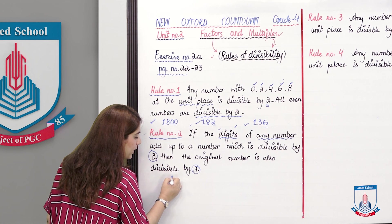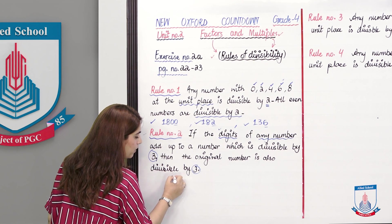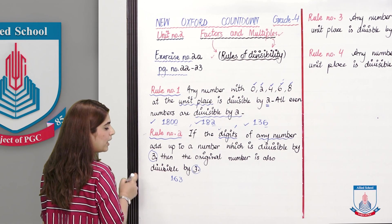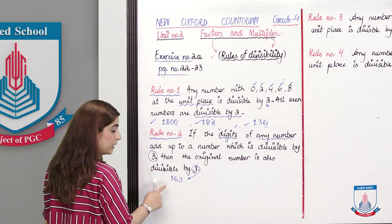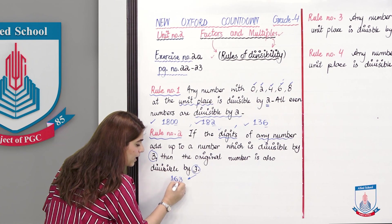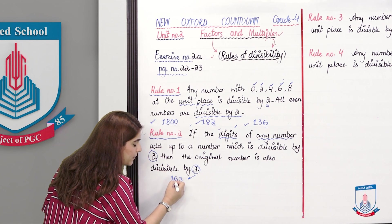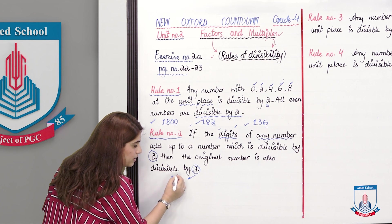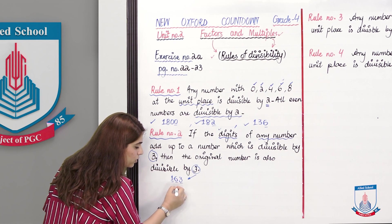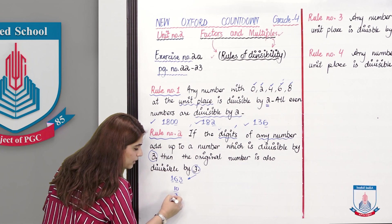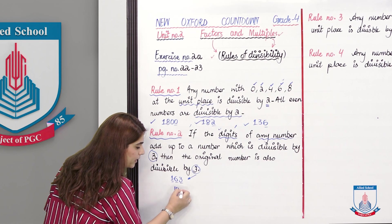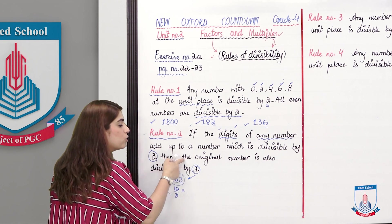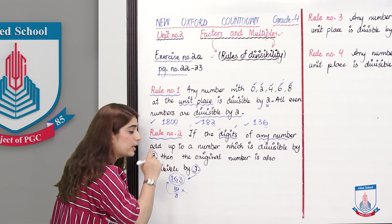For example, if I have the number 163 — we need to know whether it is divisible by 3 or not. We check by adding the digits: 1 plus 6 is 7, and 7 plus 3 is 10. Since 10 cannot be completely divided by 3, the original number 163 is not divisible by 3.